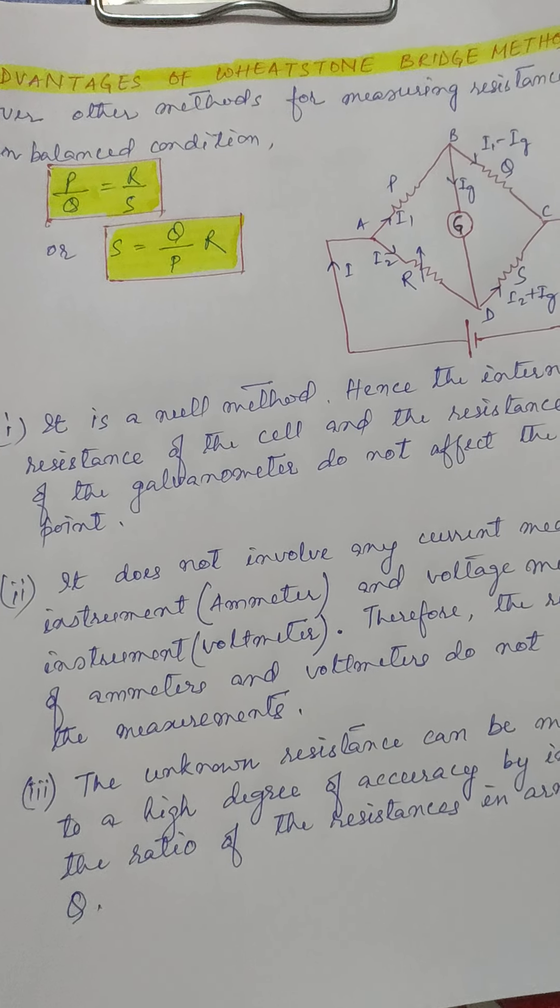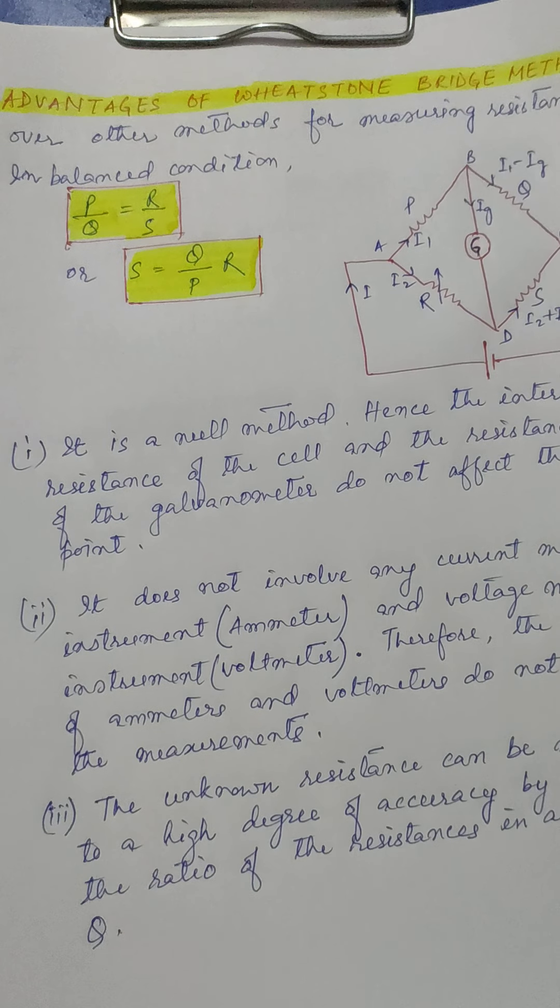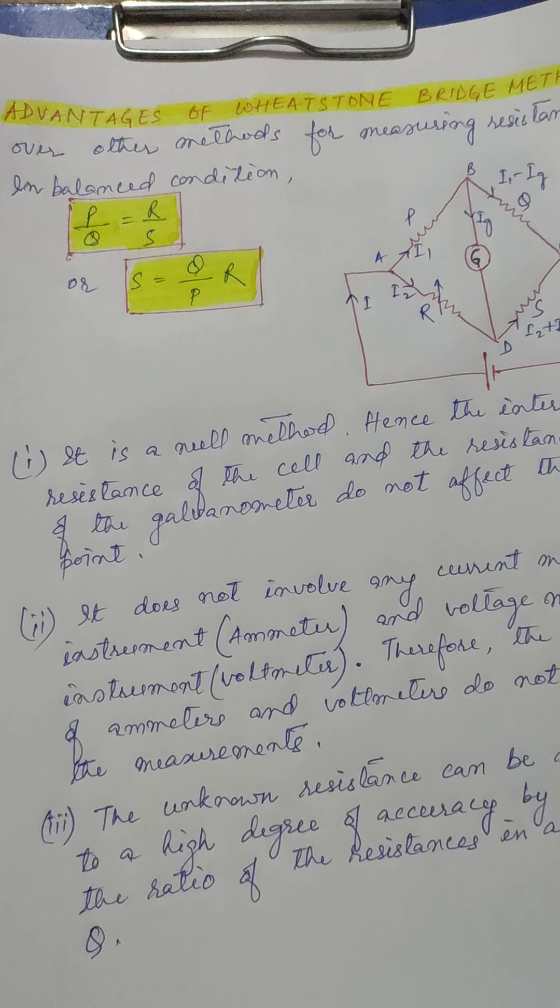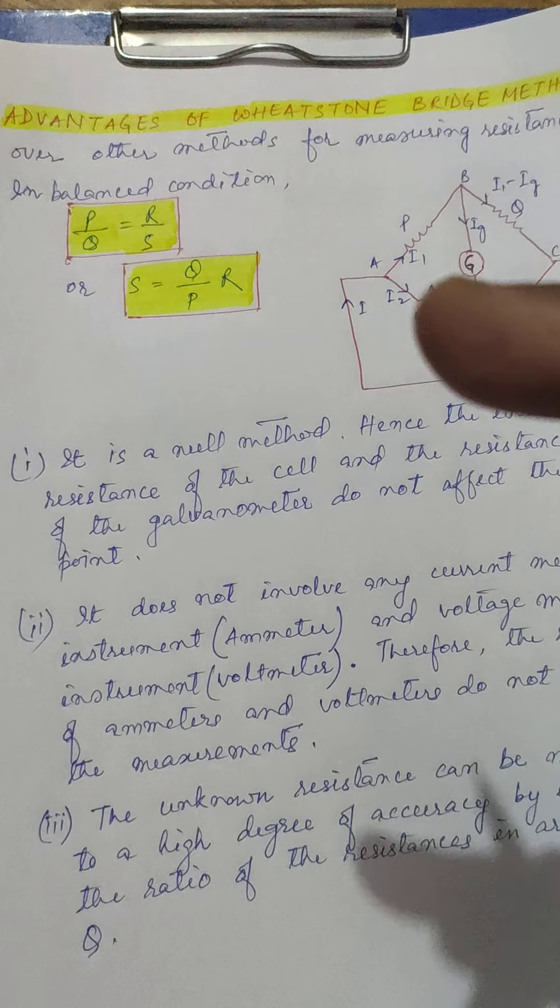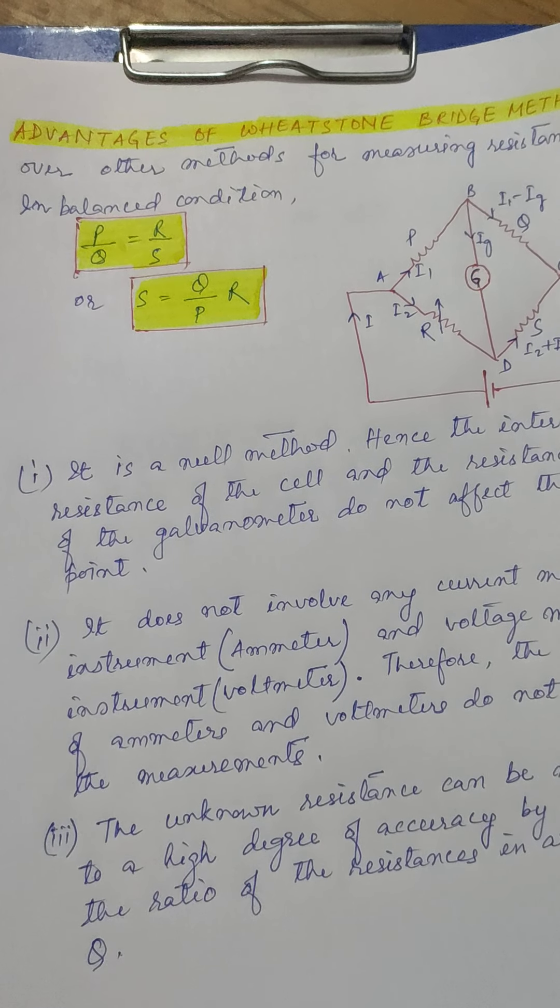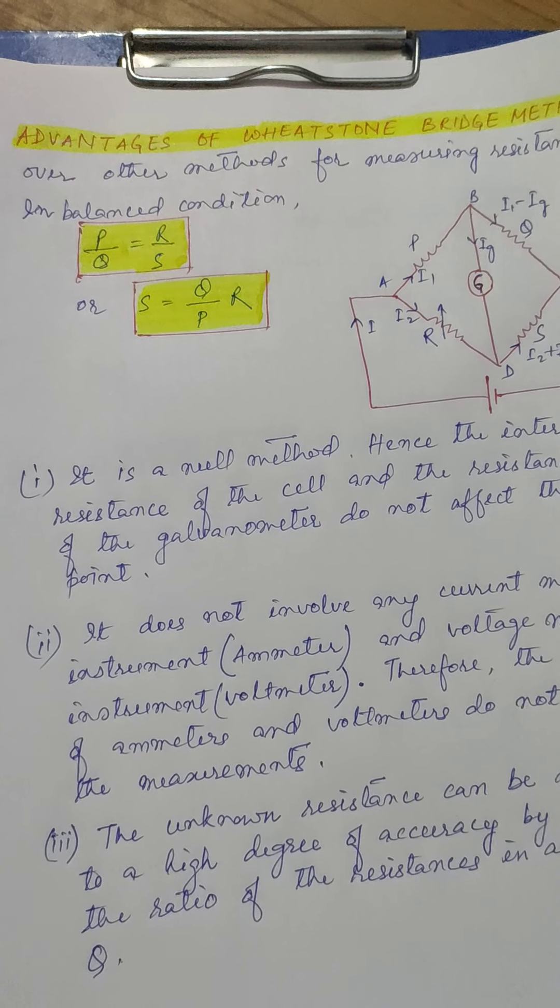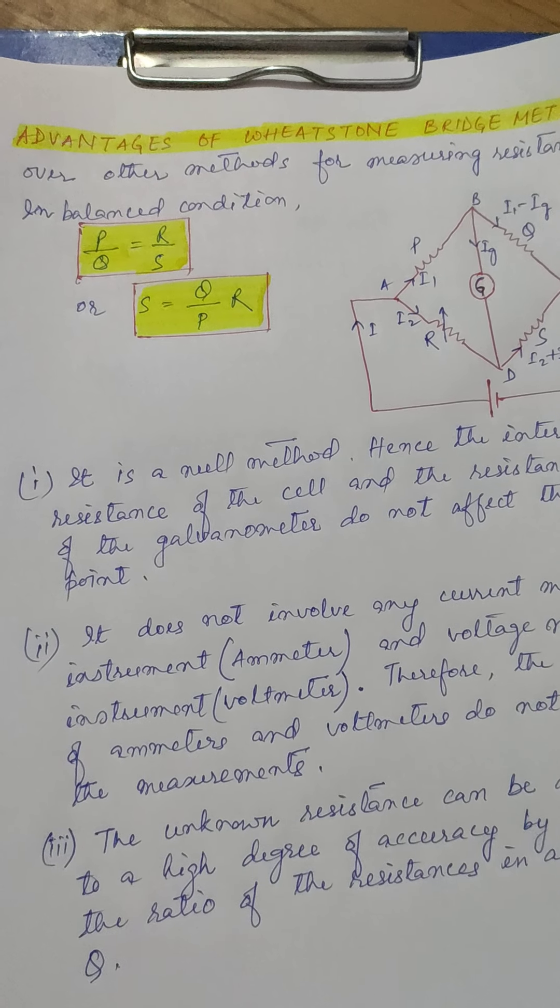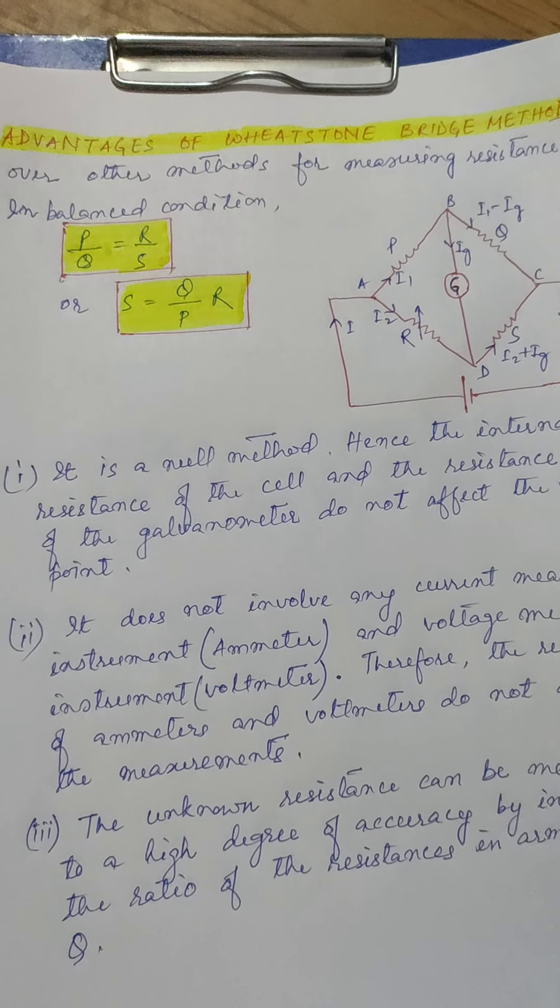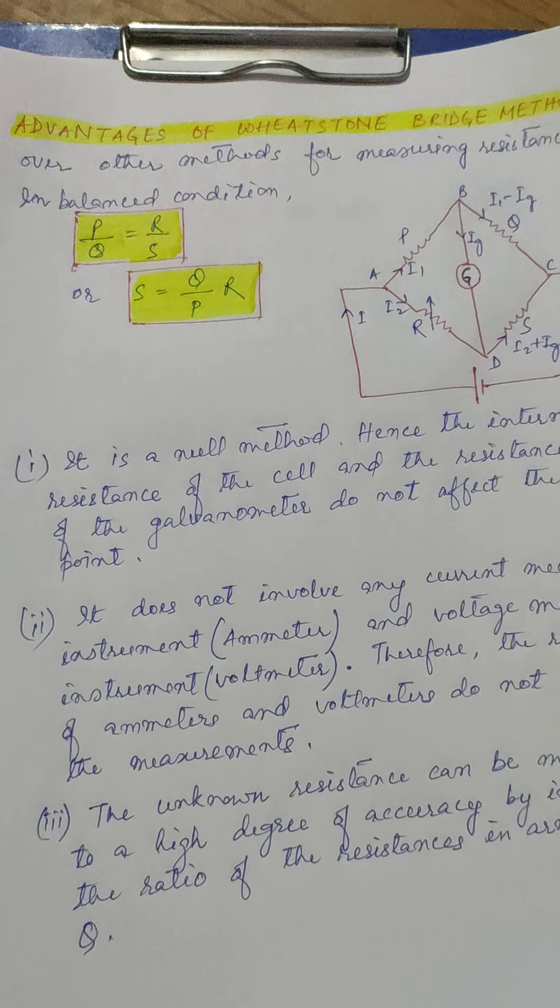We can measure the value of resistance by using an ammeter to measure the current if the voltage is known, or we can use a voltmeter to measure the resistance if the current is known. So there are different ways to measure resistance, but this method is advantageous as compared to the other methods.